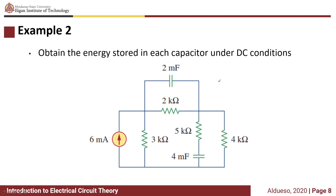Next example: obtain the energy stored in each capacitor under DC conditions. Remember, at DC — meaning the voltage is constant — the capacitor is an open circuit. So this figure right here becomes an open circuit.